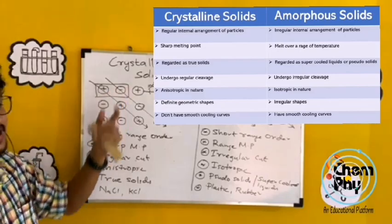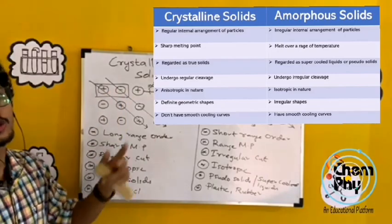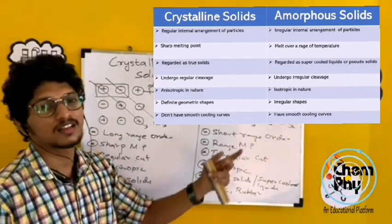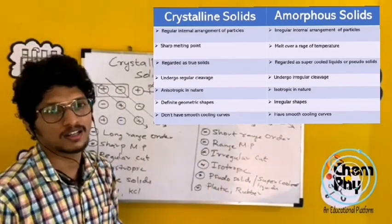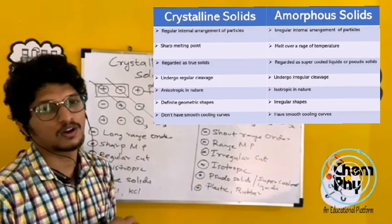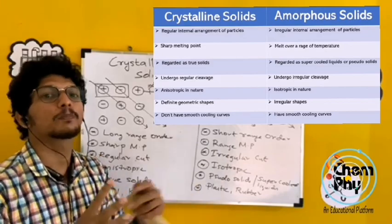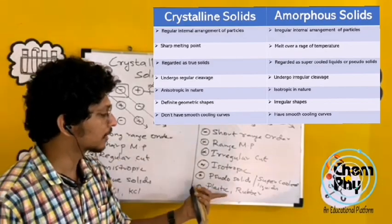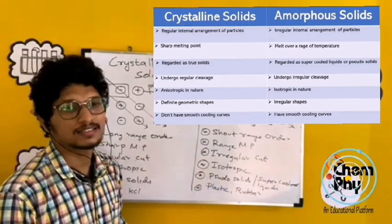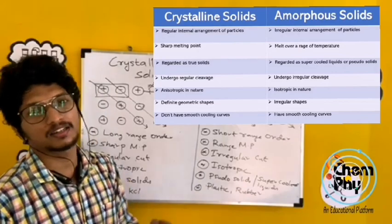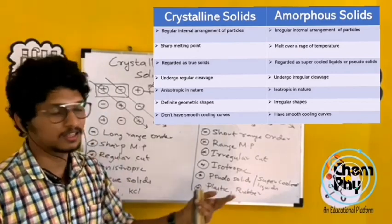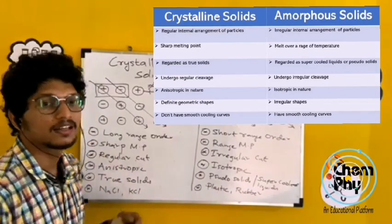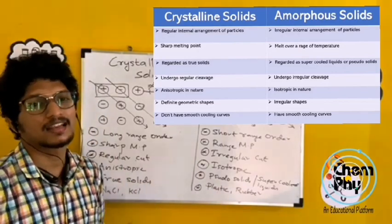Crystalline solids are true solids, while amorphous solids are also known as pseudo solids or super-cooled liquids. Examples include plastic and rubber for amorphous solids, and NaCl, KCl, and quartz for crystalline solids. Thank you.